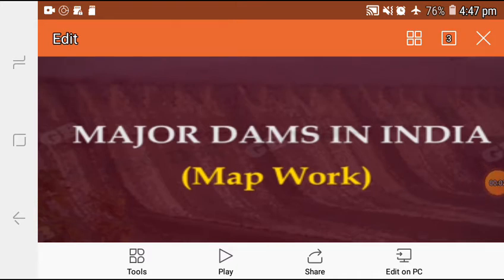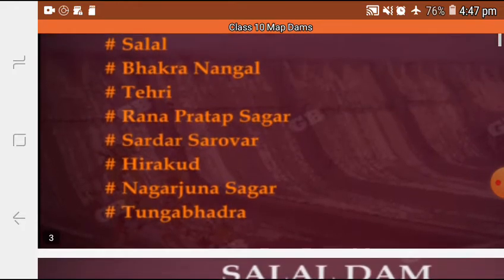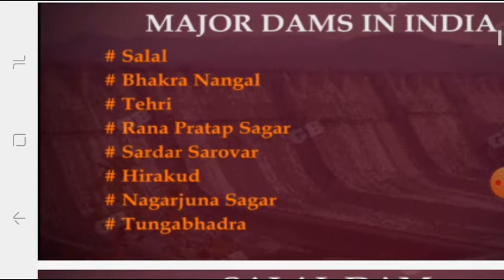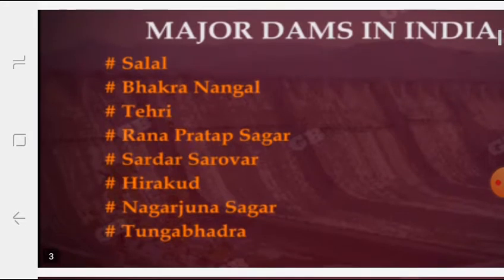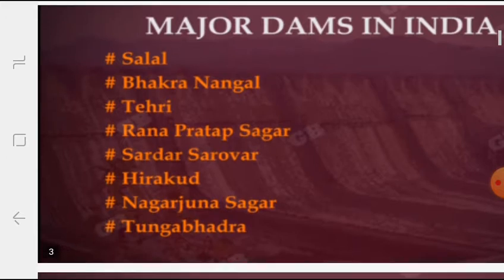Welcome back students. Today we are going to discuss the second part of the chapter Water Resources, which is a map-based chapter as decided by the CBSE board for this year. In this video we are going to discuss the Rana Pratap Sagar Dam, Sardar Sarovar Dam, Hirakud Dam, Nagarjuna Sagar Dam, and the Tungabhadra Dam. In yesterday's video we had already covered the Salal Dam, Bhakra Nangal Dam, and the Tehri Dam.